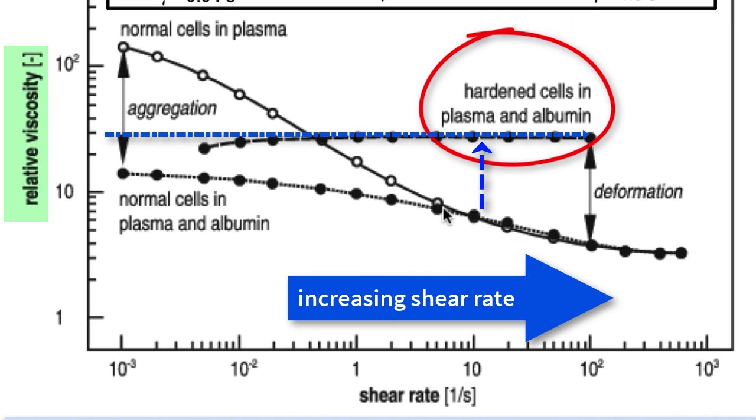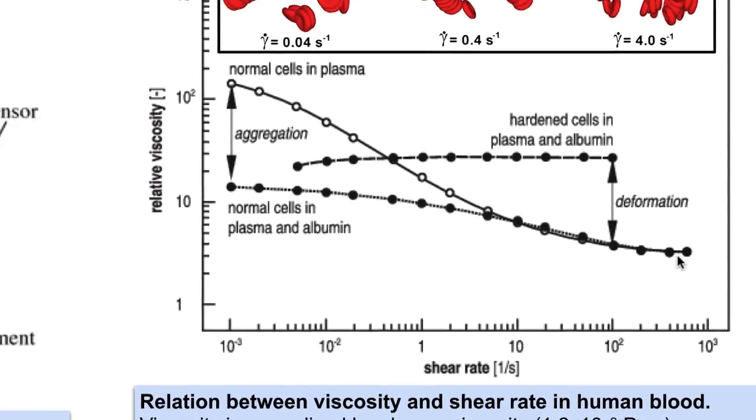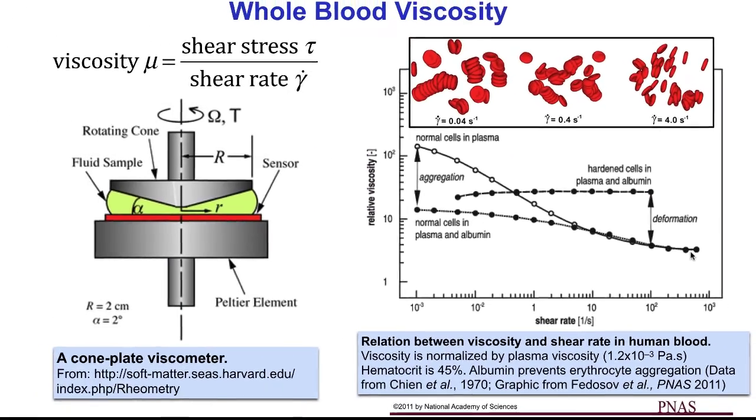So this suggests that at higher shear rates, when the Rouleau or aggregates of red cells have broken up, the continued decrease in viscosity is a result of the deformability of the red blood cells.